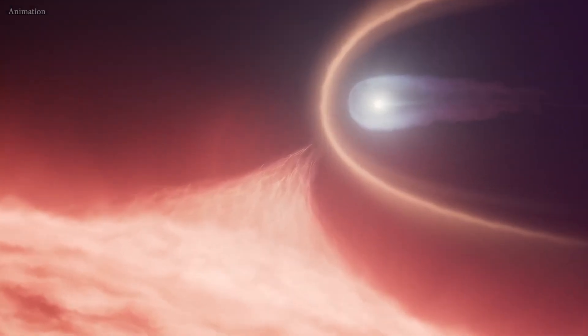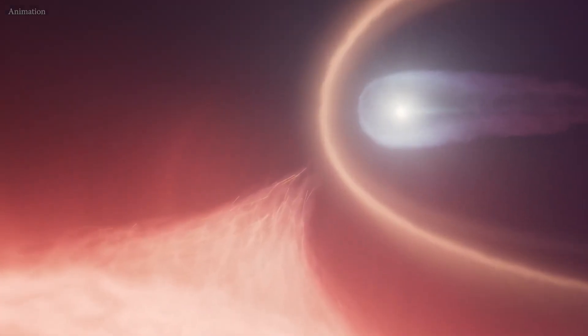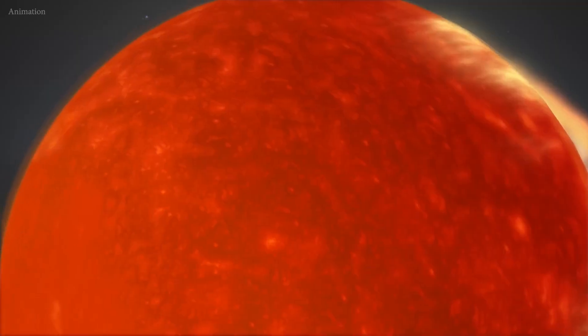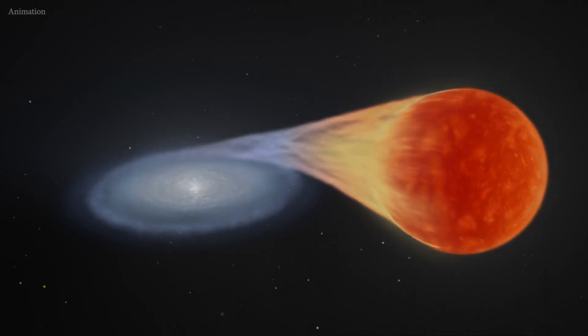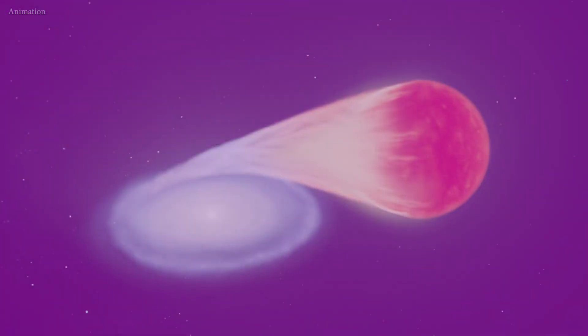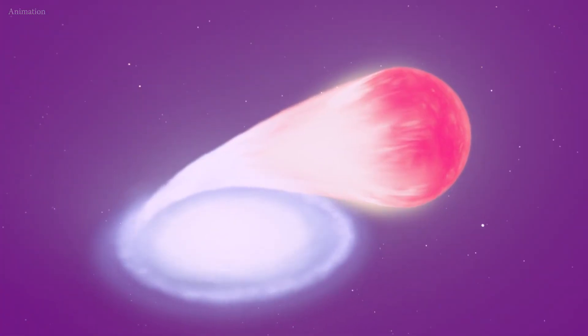This white dwarf's merger origin would be impossible to identify without Hubble's ultraviolet sensitivity. In hotter white dwarfs, spectral lines from elements heavier than helium fade in visible light and stay bright in ultraviolet, where Hubble can detect them.